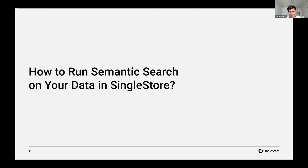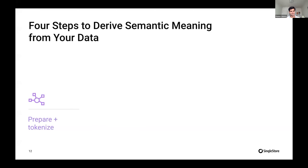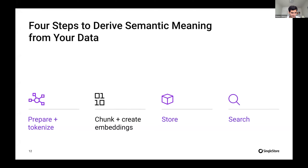So here's how we conduct semantic search. There are four steps to drive semantic meaning for your data. The first step is always to prepare and tokenize the data. The second — and quite important — step is what to chunk: how do you break the data you're collecting from all your different sources into a uniform pattern that you can then create vector embeddings for? Then you store it and search it. The cool thing is you can do almost all of these things natively on SingleStore.